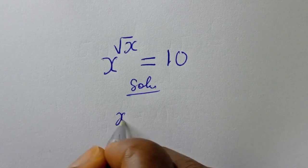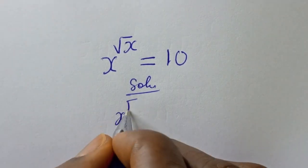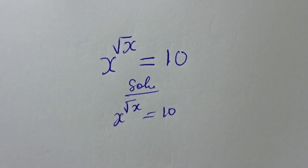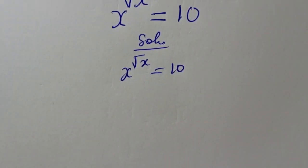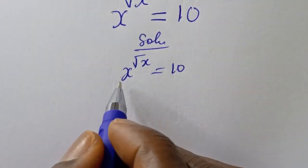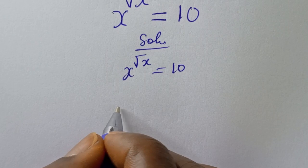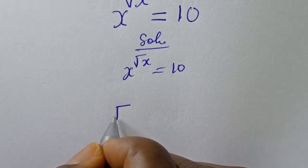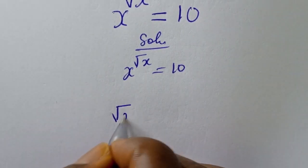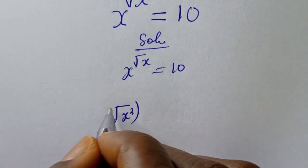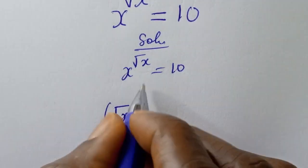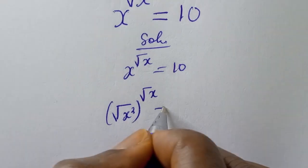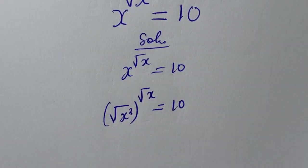We have s to the power of square root of s is equal to 10. Then s can be written as square root of s squared, to the power of square root of s, is equal to 10.